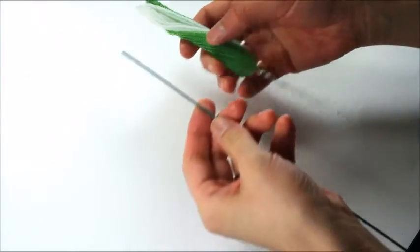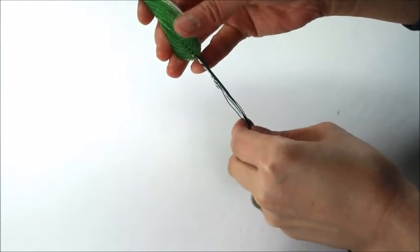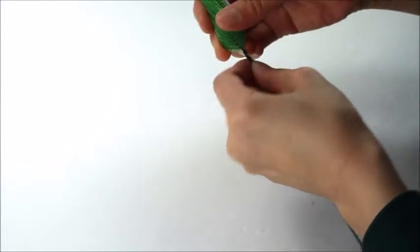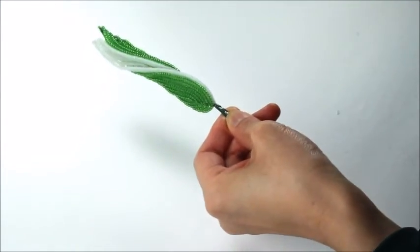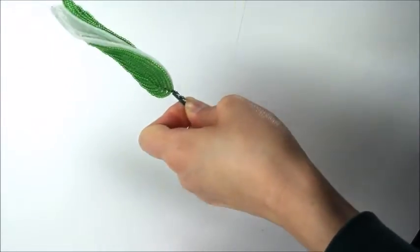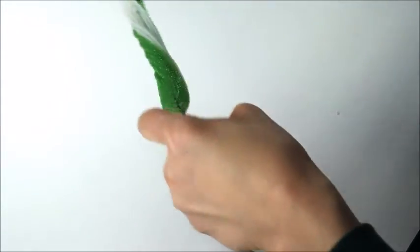Now take a piece of stem wire, this is 20 gauge. Place the bud next to the stem wire here. I'm going to take some thread here and just wrap it around.